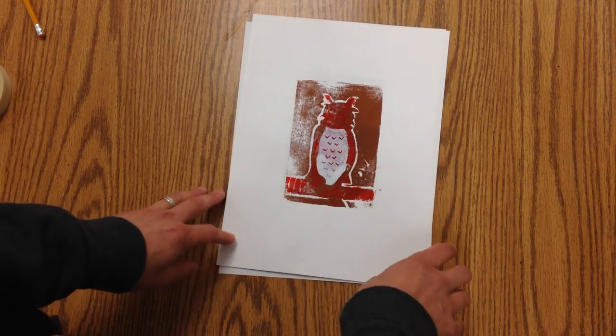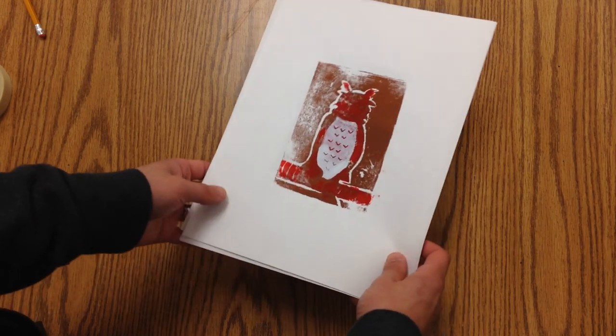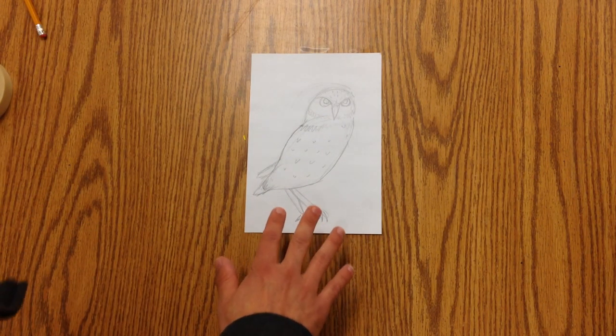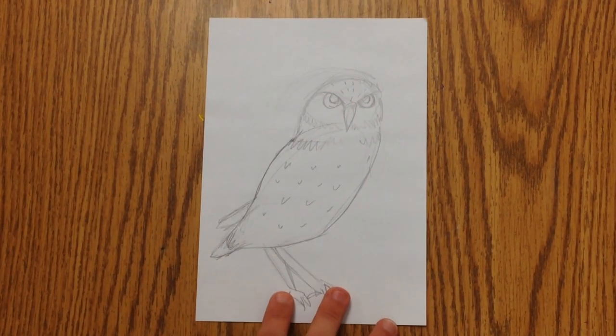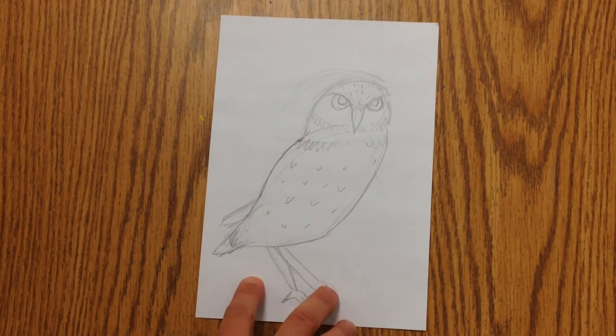What we're going to do is talk about the whole process. First, you're going to take a piece of paper and make a sketch of what you would like your print to be of. You want to make all your revisions and changes here. I have this burrowing owl which can be found on the prairie.